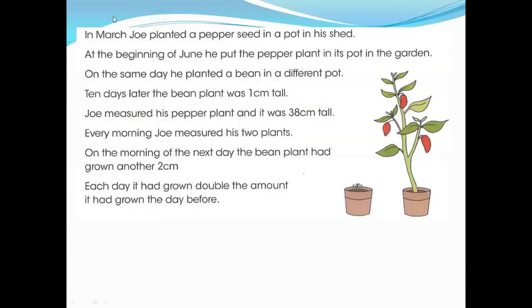The next question. In March Joe planted a pepper seed in a pot in his shed. At the beginning of June he put the pepper plant in its pot in the garden. On the same day he planted a bean in a different pot. 10 days later the bean plant was 1 centimeter. It's starting from 10th day. And the first day after, first day was on 10th day. So 1 centimeter. Then what about pepper plant? It was 38 centimeter tall. Every morning Joe measured his two plants. On the morning of the next day the bean plant had grown another 2 centimeter.